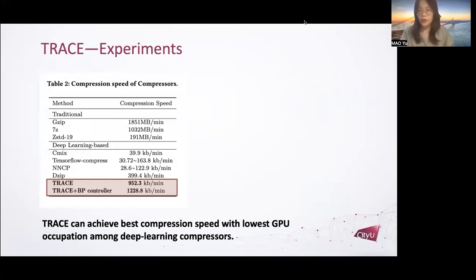An interesting phenomenon is that NNCP and TensorFlow Compress's compression speed is unstable, changing with the data type. This is due to their dictionary-based compression process. Lightweight compressors escape from this disaster. DVIP and TRACE both obtain stable, fast compression speed ignoring data stream type. But TRACE is two times faster than DVIP. And after equipping with the backprop controller, TRACE's speed is further improved by 29%, which is three times of DVIP.